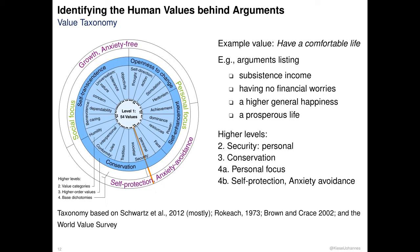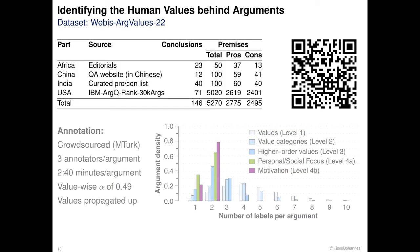Even more abstractly, Schwartz sees two base dichotomies, between personal and social focus, and between growth and self-protection. As the figure shows, having a comfortable life is more about self-protection, and at the border between personal and social focus, as having a comfortable life oneself is often connected to a safe and stable society.